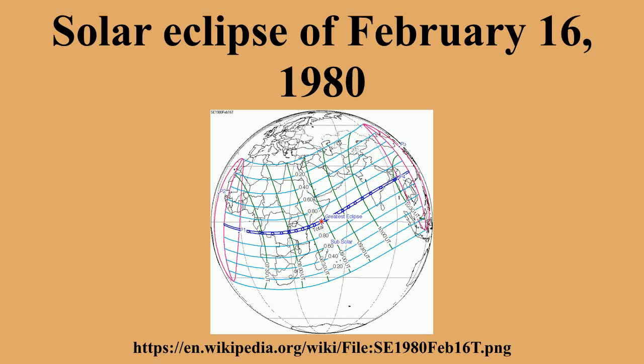A total solar eclipse occurs when the Moon's apparent diameter is larger than the Sun's, blocking all direct sunlight and turning day into darkness. Totality occurs in a narrow path across Earth's surface, with the partial solar eclipse visible over a surrounding region thousands of kilometers wide.